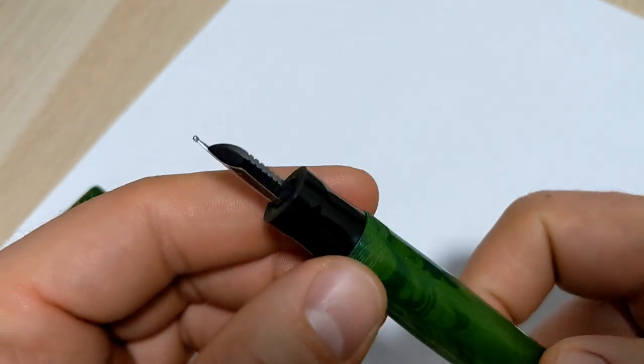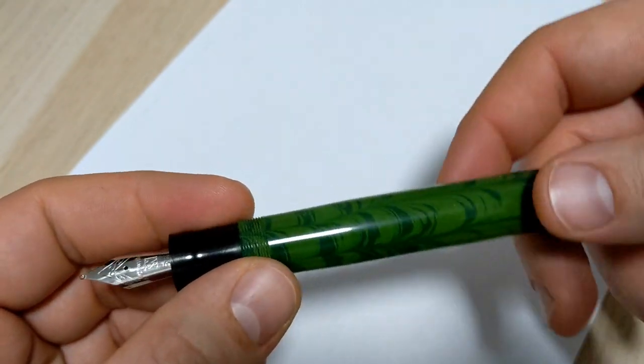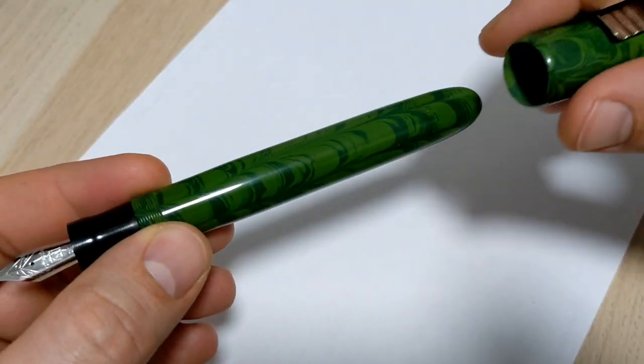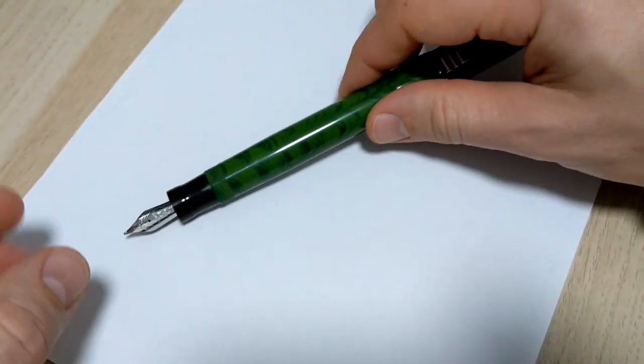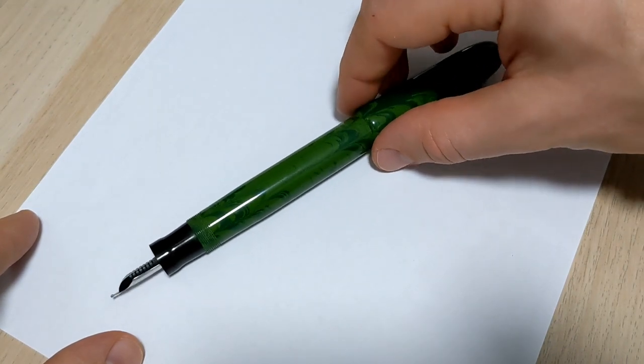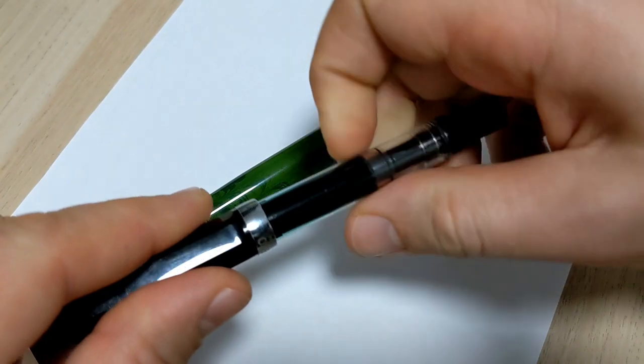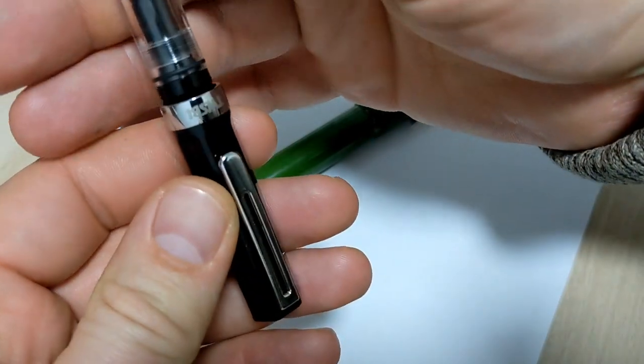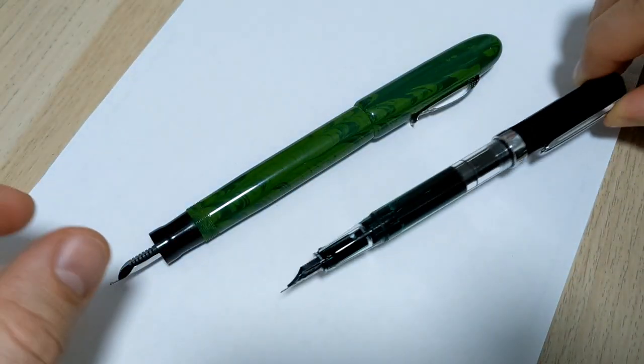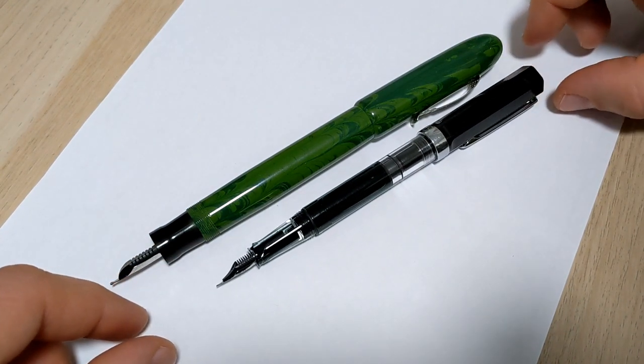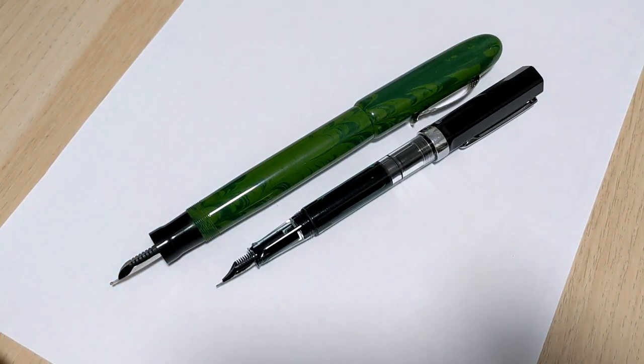It posts and it gets stupid. It's so huge. You post a TWSBI Eco, you know this is a super long pen when you post, because it barely posts deep at all. And this thing is just so giant.